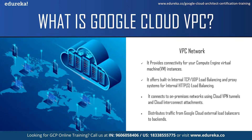Now let us understand VPC networks. You can think of a VPC network the same way as a physical network, except that it is virtualized within Google Cloud. A VPC network is a global resource that consists of a list of regional virtual subnetworks in data centers, which are called subnets, all connected by a global wide area network. VPC networks are logically isolated from each other in Google Cloud.